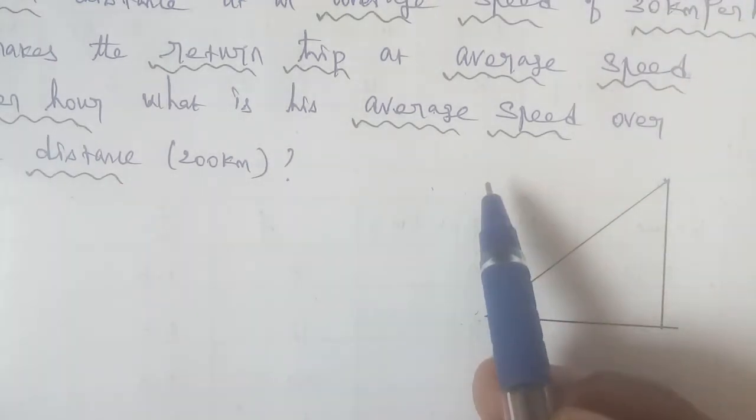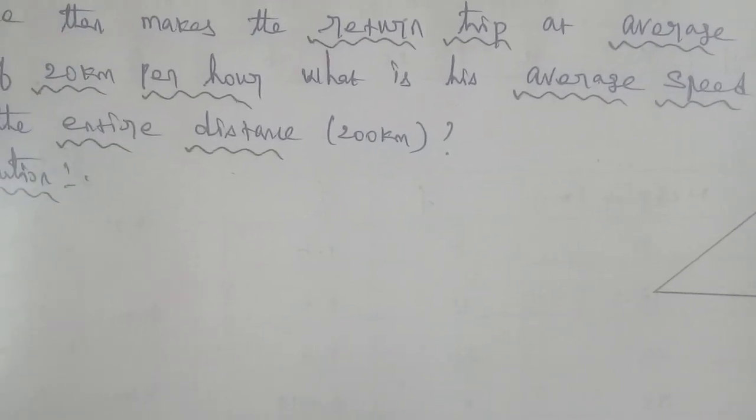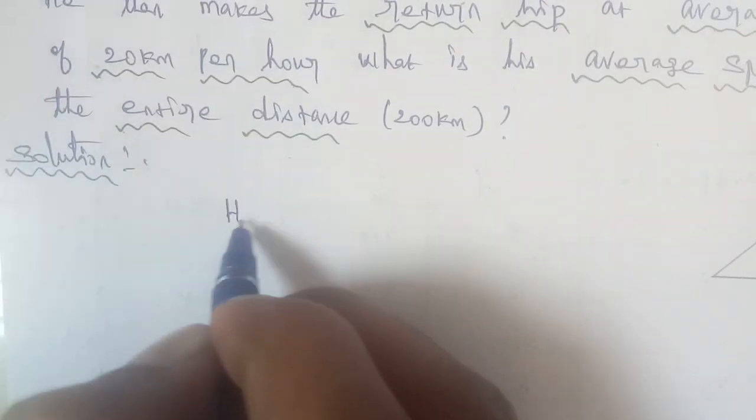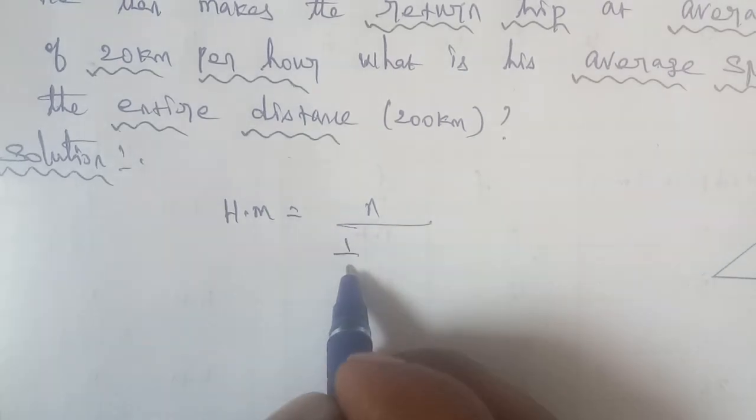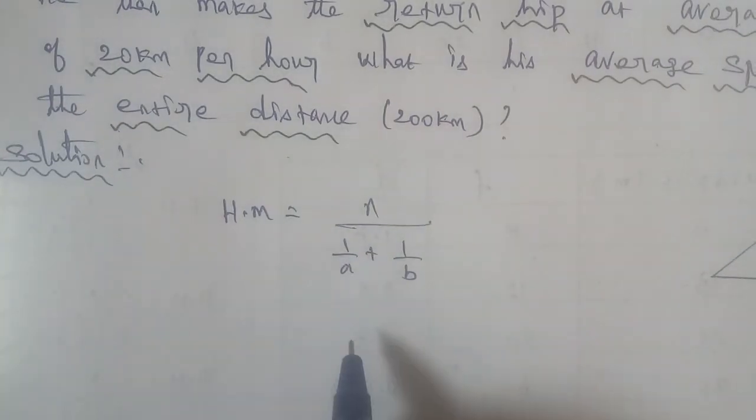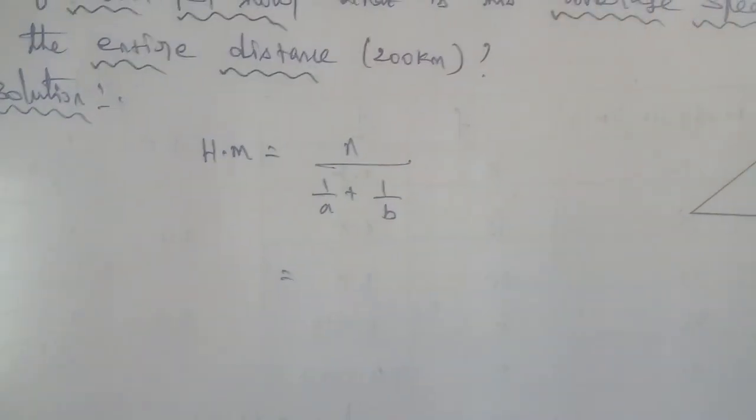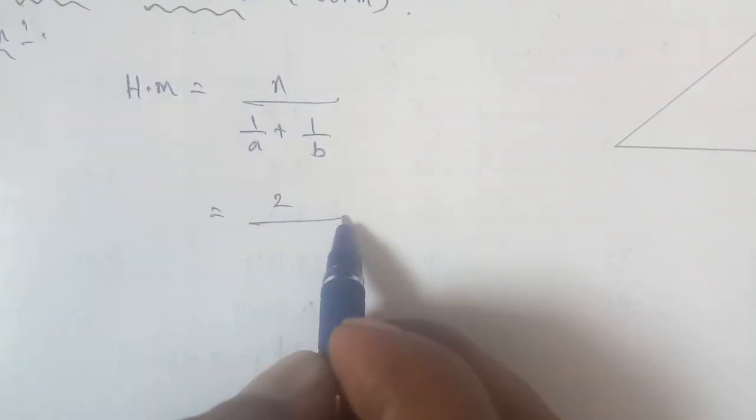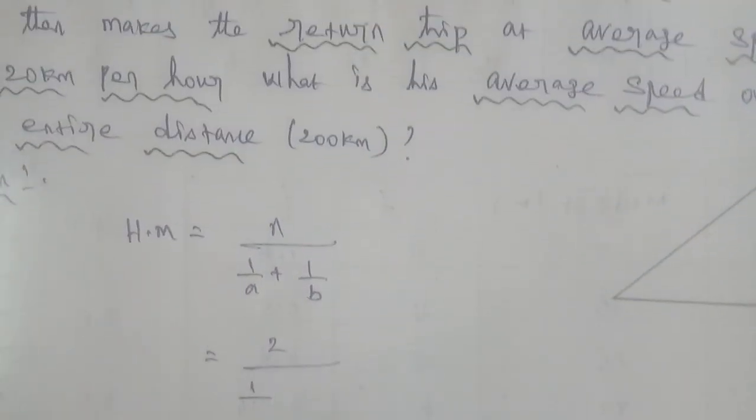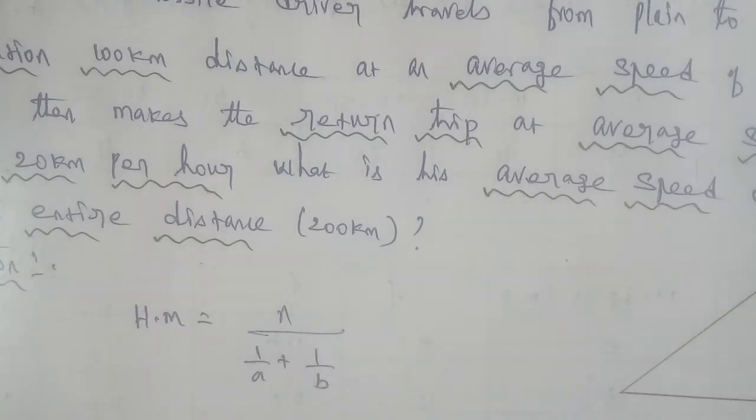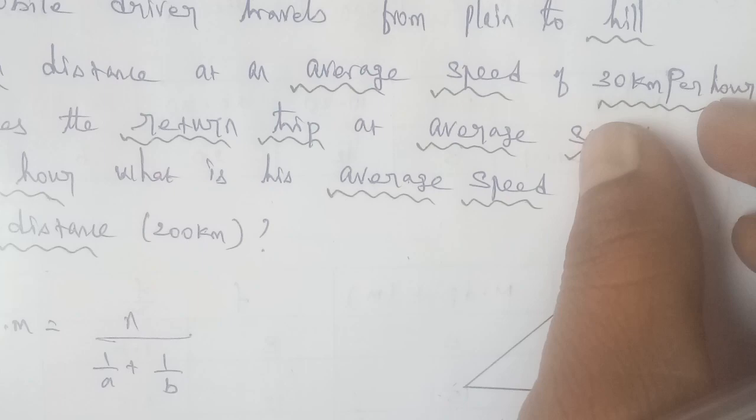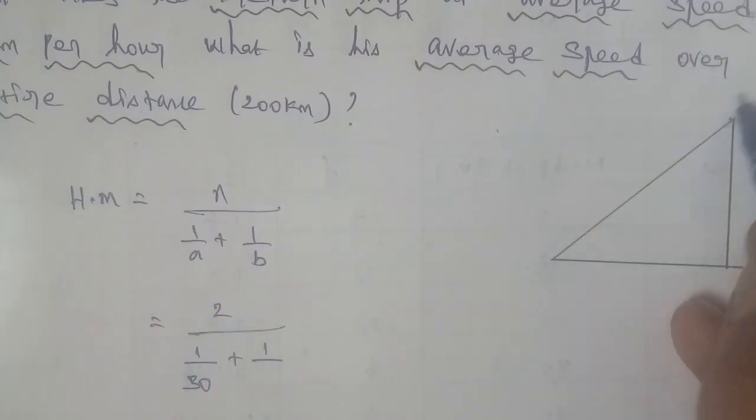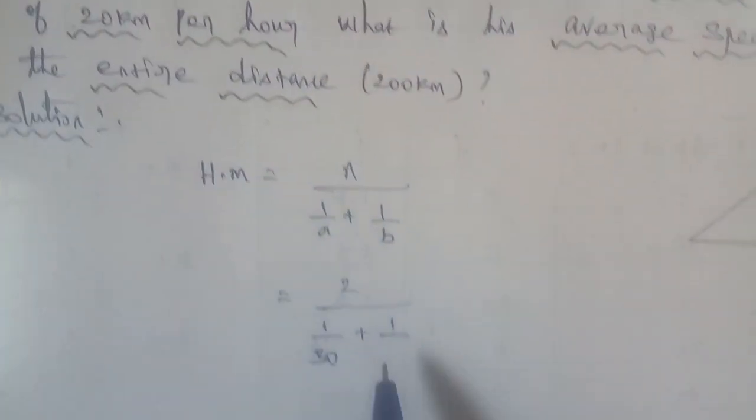The harmonic mean formula is: n divided by 1 by A plus 1 by B. N is the number of trips, so 2 trips. First trip and return trip, that's 2. 1 by A, the first average speed is 30, so 1 by 30. Plus 1 by B, the return is 20 km per hour, so 1 by 20.